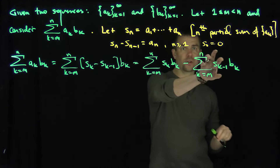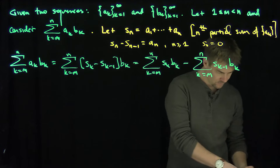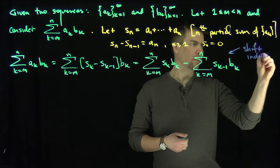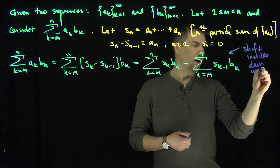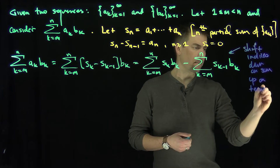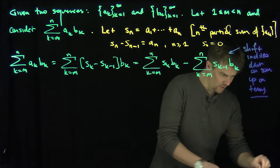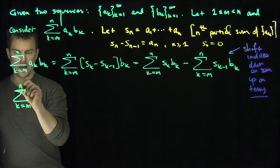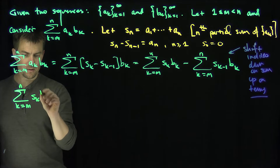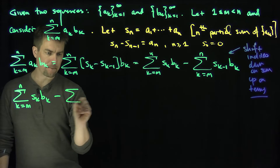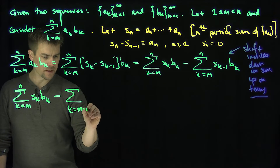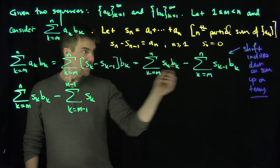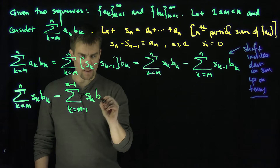Now on that second sum we're going to shift the indices — shifting the index down on the sum and up on the terms. The first sum stays the same: the sum of S_k * b_k for k from m up to n. The second sum becomes the sum for k from m−1 up to n−1 of S_k * b_{k+1}, after the pure index shift.